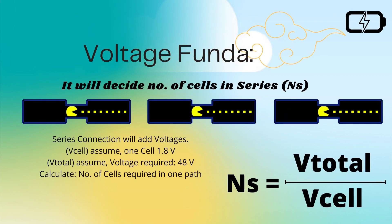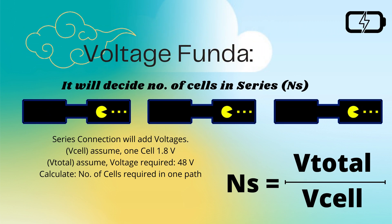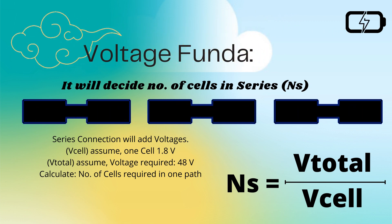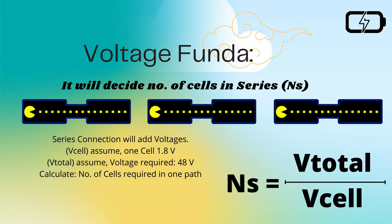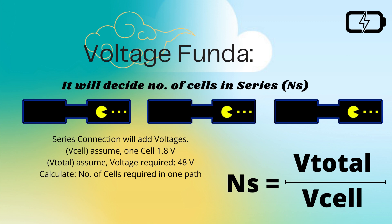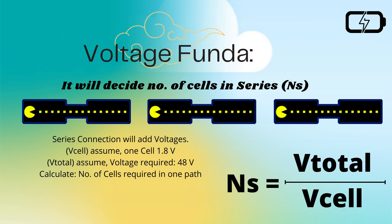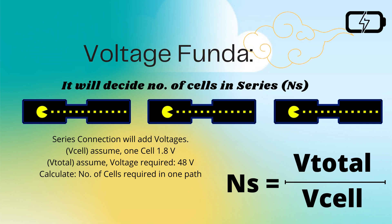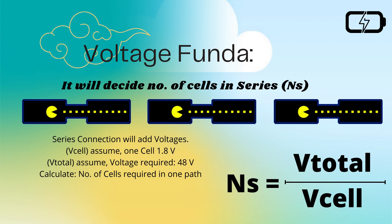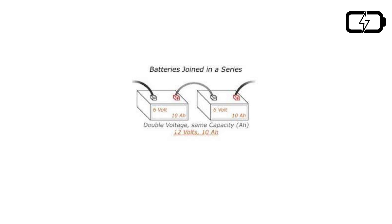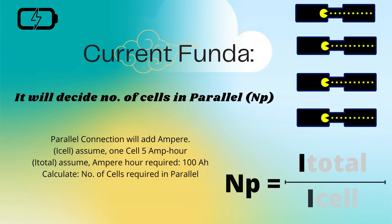For the voltage calculation, the voltage rating gives you the number of cells required in series connection. For example, if one cell has 1.8 V and your BSS requires 48 V, then the number of cells in series equals V_total divided by V_cell. For instance, two cells of 6 V each in series give a total battery pack voltage of 12 V, while the ampere-hour capacity remains constant.